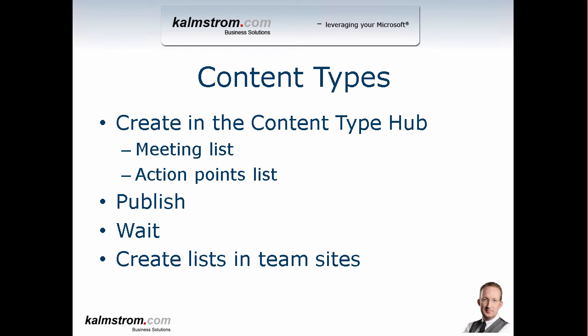Then the content types that are going to be created — there are going to be two of them: a meeting list content type and an action point list content type. Both of those are going to be published in the content type hub, which is something you might not have worked with before but it's really powerful and it increases discoverability in your enterprise scenario. Otherwise you'd have to create the content types in every site collection, and you really don't want to do that. So I'm going to publish those in the content type hub, then wait until they're actually published, and then create the lists in the team sites I have for each department.